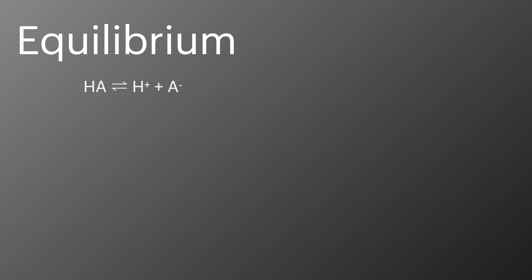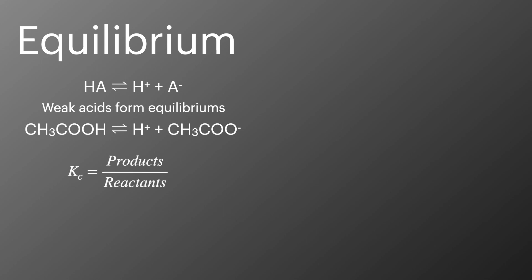As we've just seen weak acids only partially dissociate and when they do they form an equilibrium. This is exactly like the equilibriums we looked at in the first year studies. But because we're looking at the equilibrium for acid dissociation we change that Kc now to Ka.